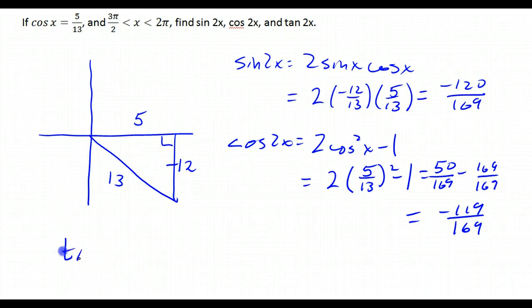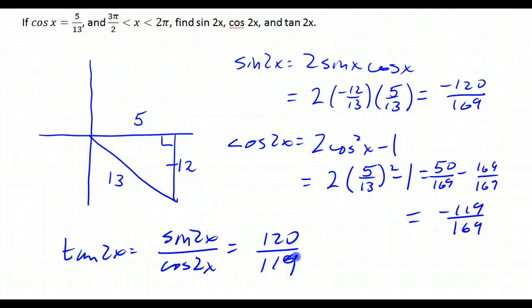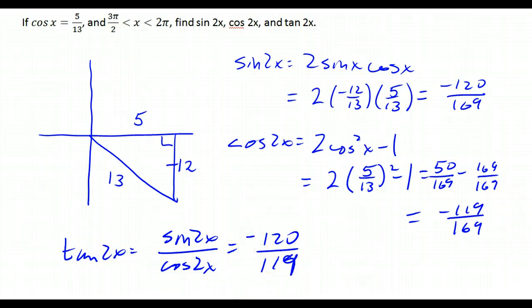And finally, the tangent of 2x equals sine 2x over cosine 2x, which works out to 120 over 119. It's positive because both sine 2x and cosine 2x are negative.